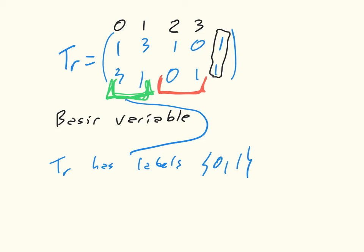Now, the way we get the actual vertex out of this is we set the non-basic variables to 0. So, in essence, we simply have x1 equals 0 and x2 equals 0.